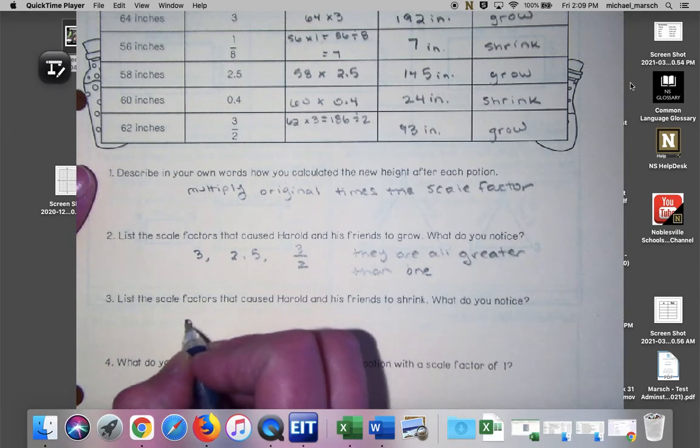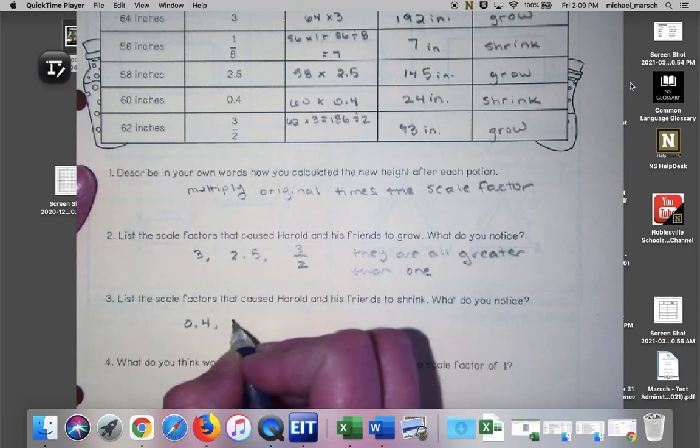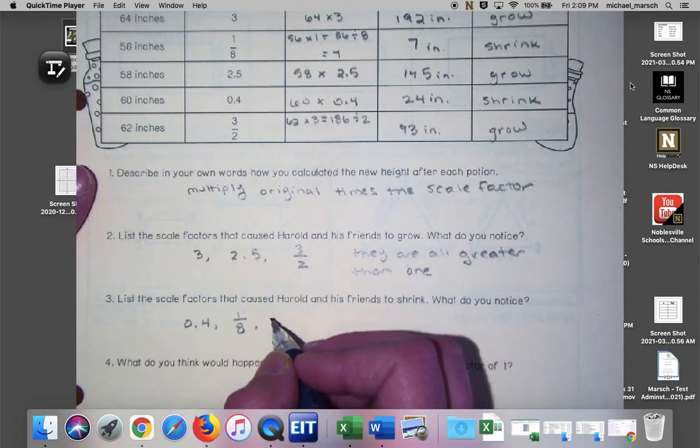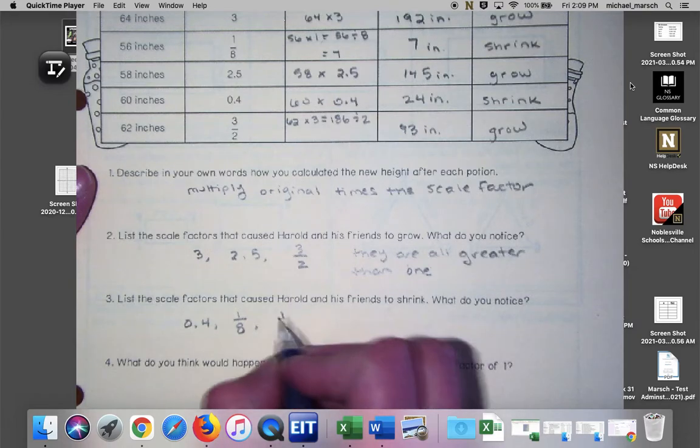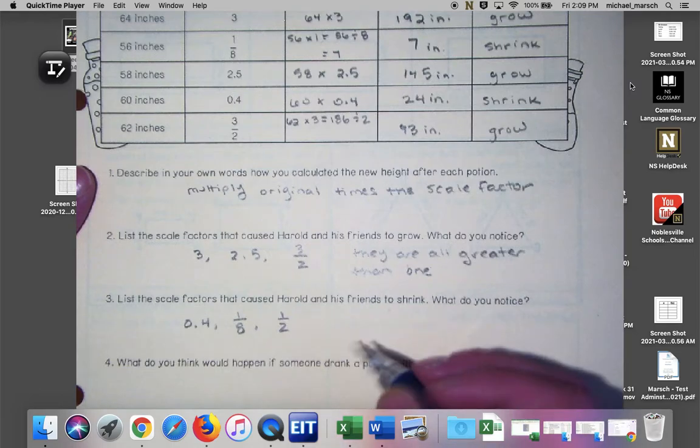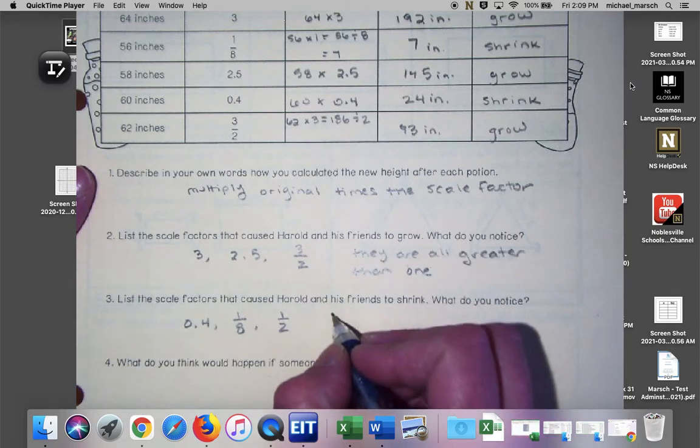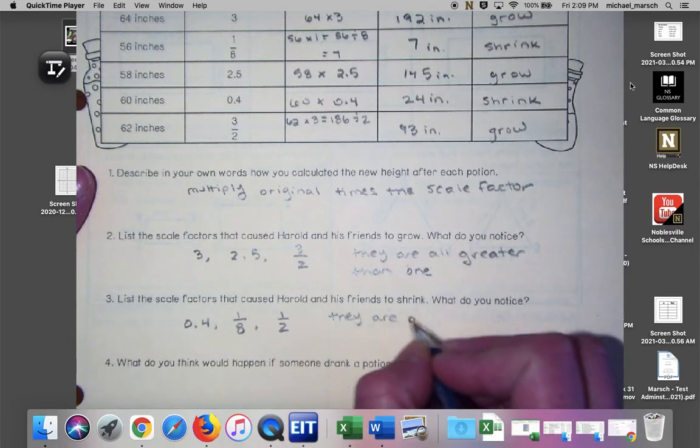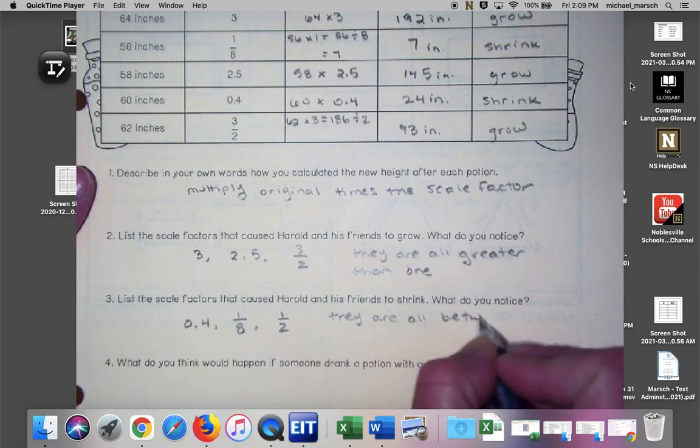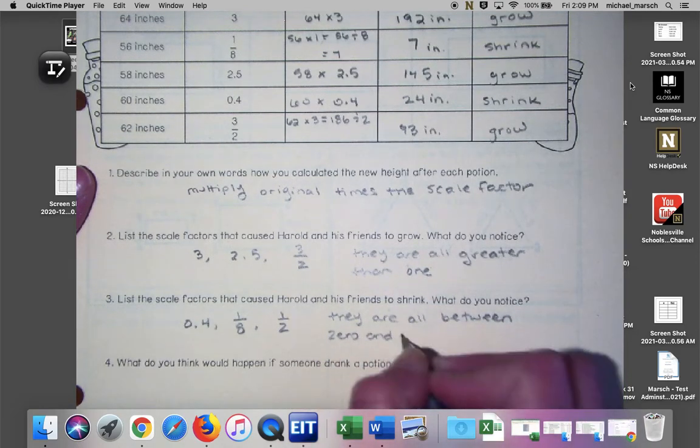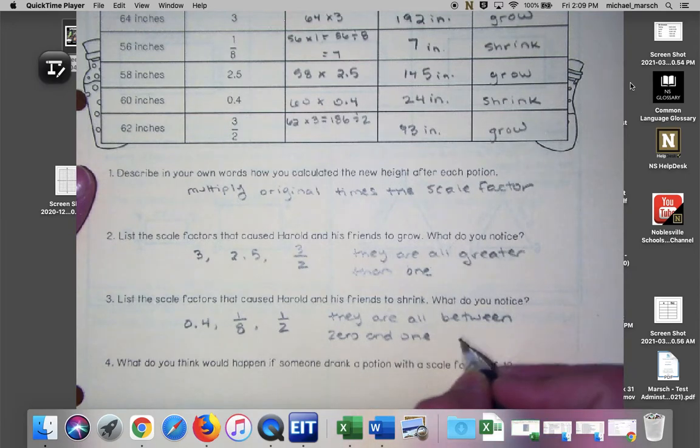How about the scale factors that caused them to shrink? One half, 0.4, one eighth. And they are, you're close, they're less than one but we need to be a little bit more specific. They are all between zero and one. So yes, fractions and decimals.